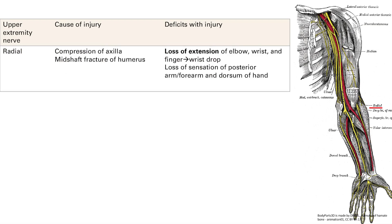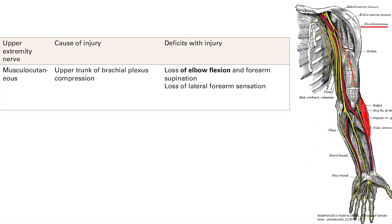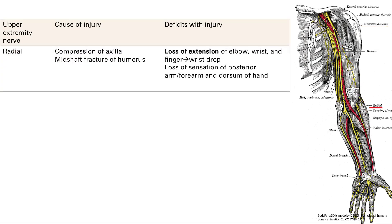Next is the radial nerve — this is super high yield. The musculocutaneous is lower yield. The radial nerve dives down below your biceps muscle. The way it gets damaged: you can get compression of the axilla, which is the armpit. Specifically, you'll see a patient with crutches, or someone with Saturday night palsy — where someone drank too much and falls asleep on a chair with one arm over the chair, compressing the armpit. The other thing that can happen is a mid-shaft fracture of the humerus, which will also damage the radial nerve.